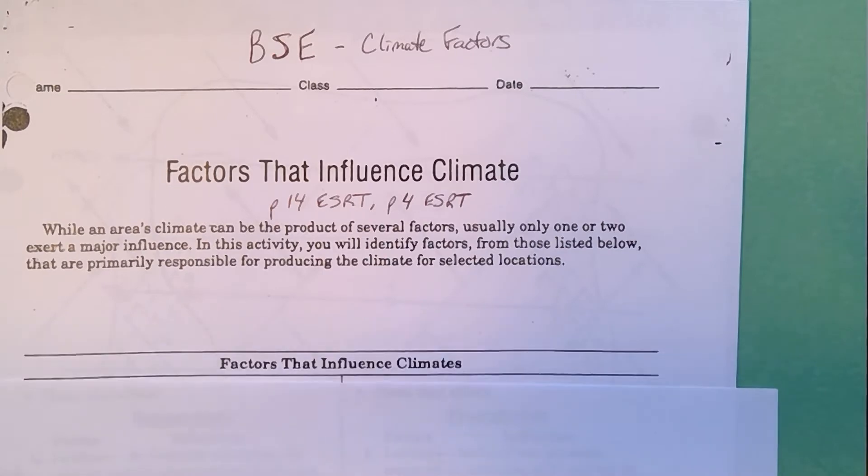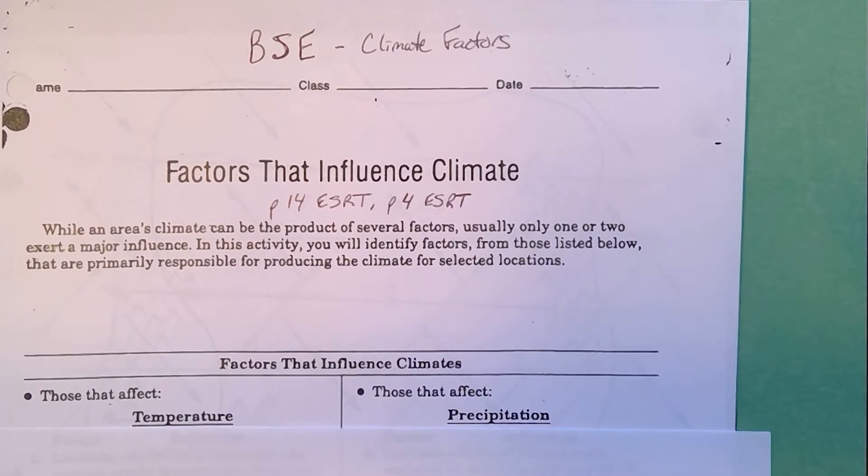On the bottom it's going to go through a sequence of factors that will describe what influences climate. What I like about this is it breaks it down into temperature and precipitation, because climate is the average conditions of temperature and moisture for a region for an extended time period.